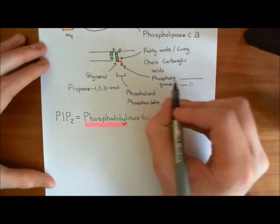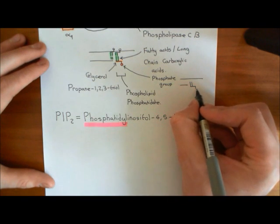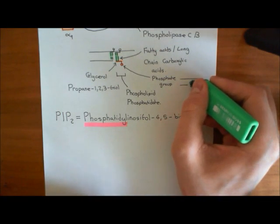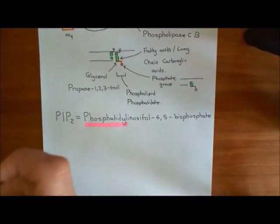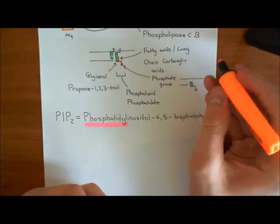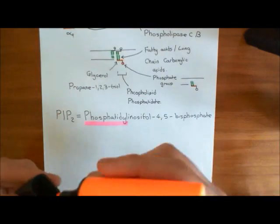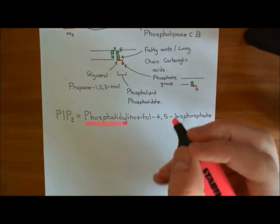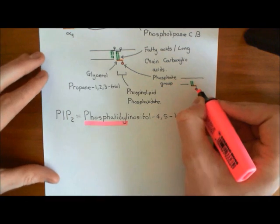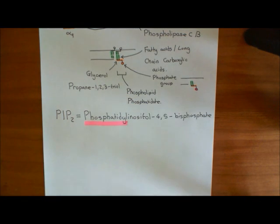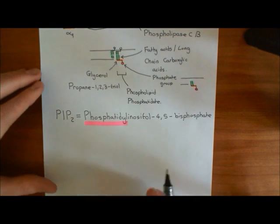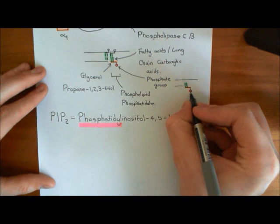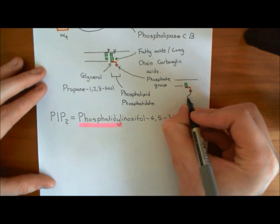If this is the phospholipid bilayer, the structure is the same. You have the phosphatidate molecule with these long-chain carboxylic acids, or fatty acids, which make up the hydrophobic tails. Then you have the glycerol in orange. Two of the hydroxyl groups of glycerol are esterified to these long-chain carboxylic acids, and the final third hydroxyl group is bound to this phosphate group. That's the structure of our phosphatidate molecule. Now to get phosphatidyl inositol, what you do is take this phosphate group and bind it to an inositol molecule.